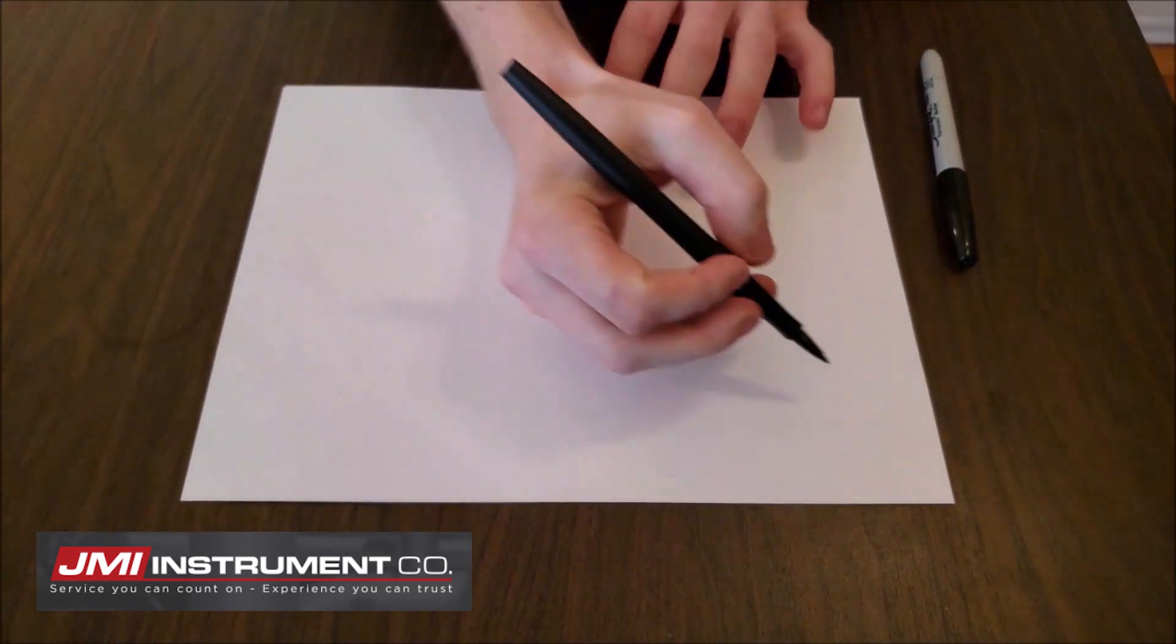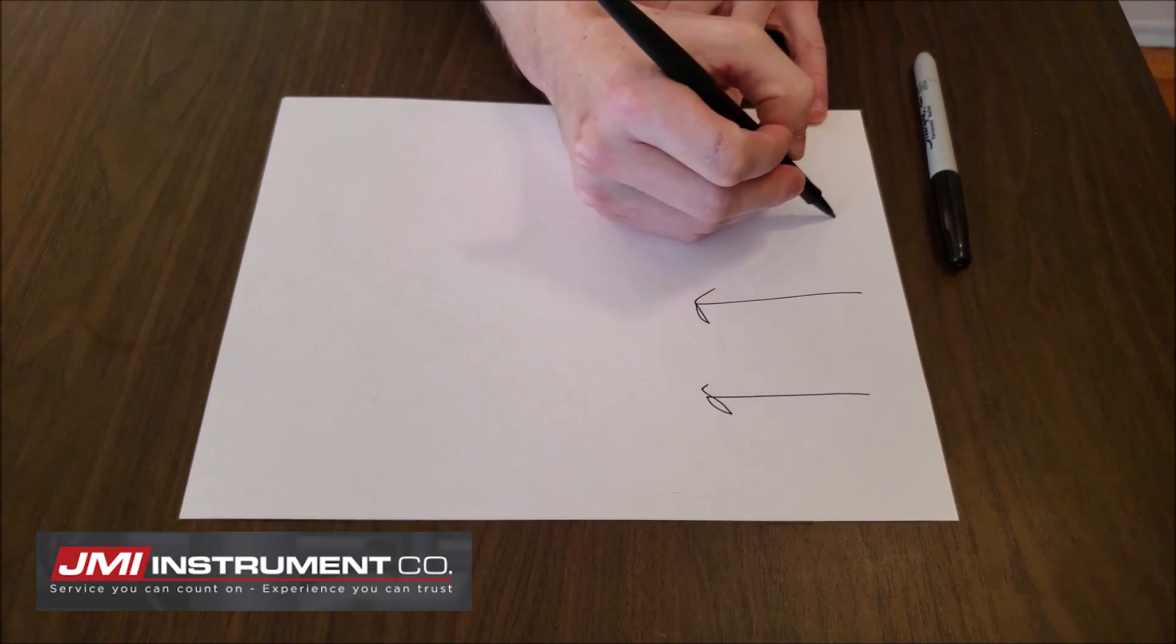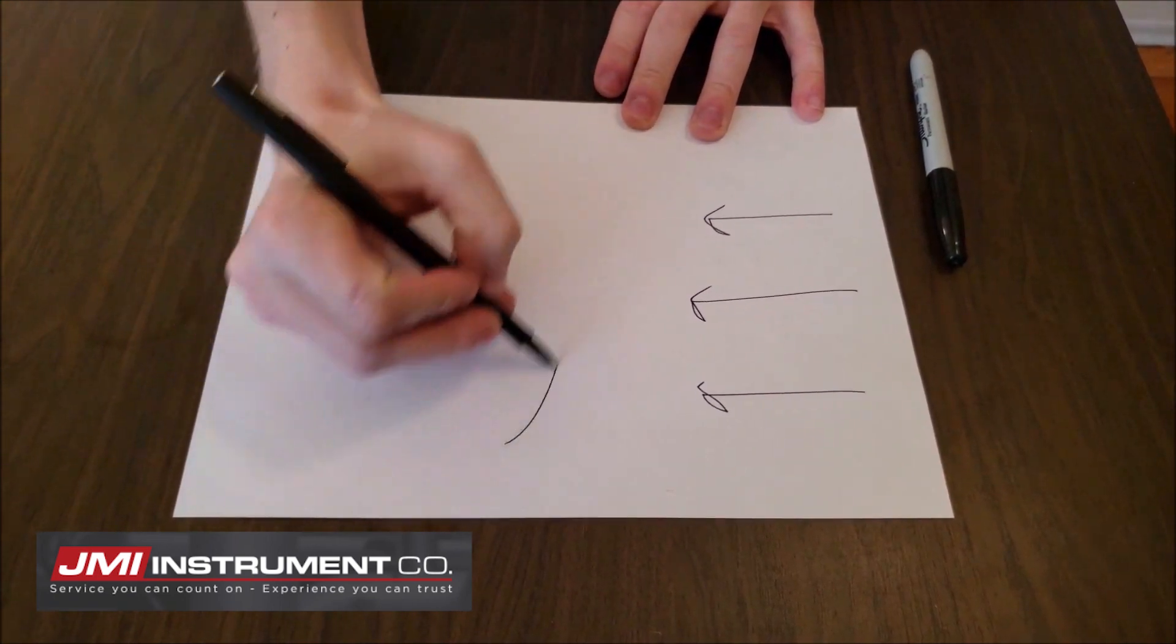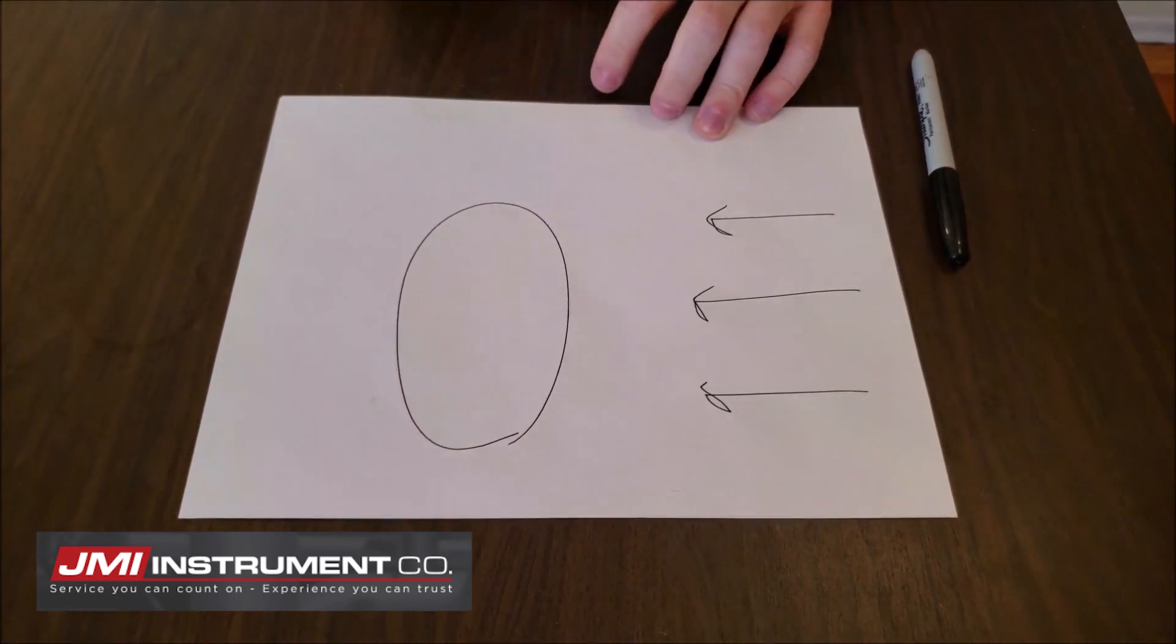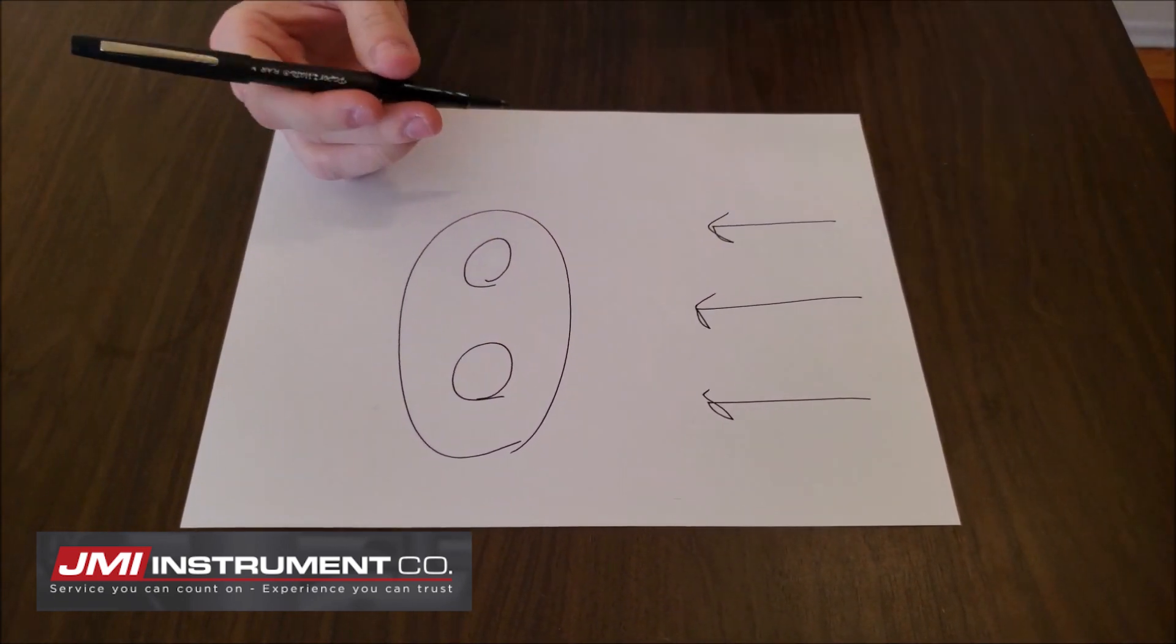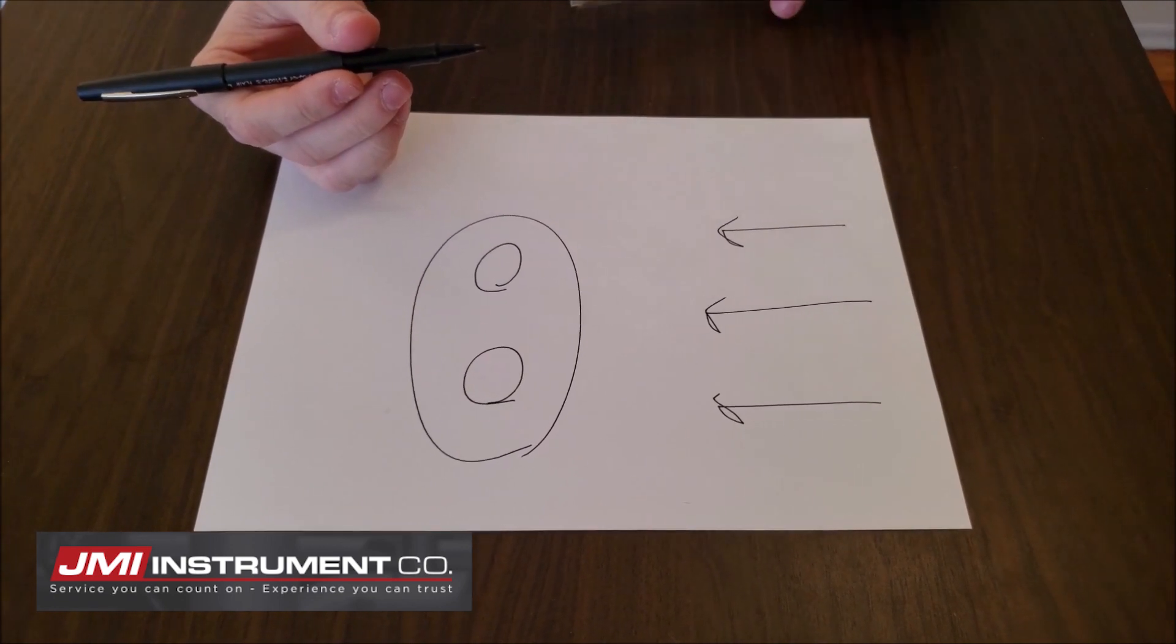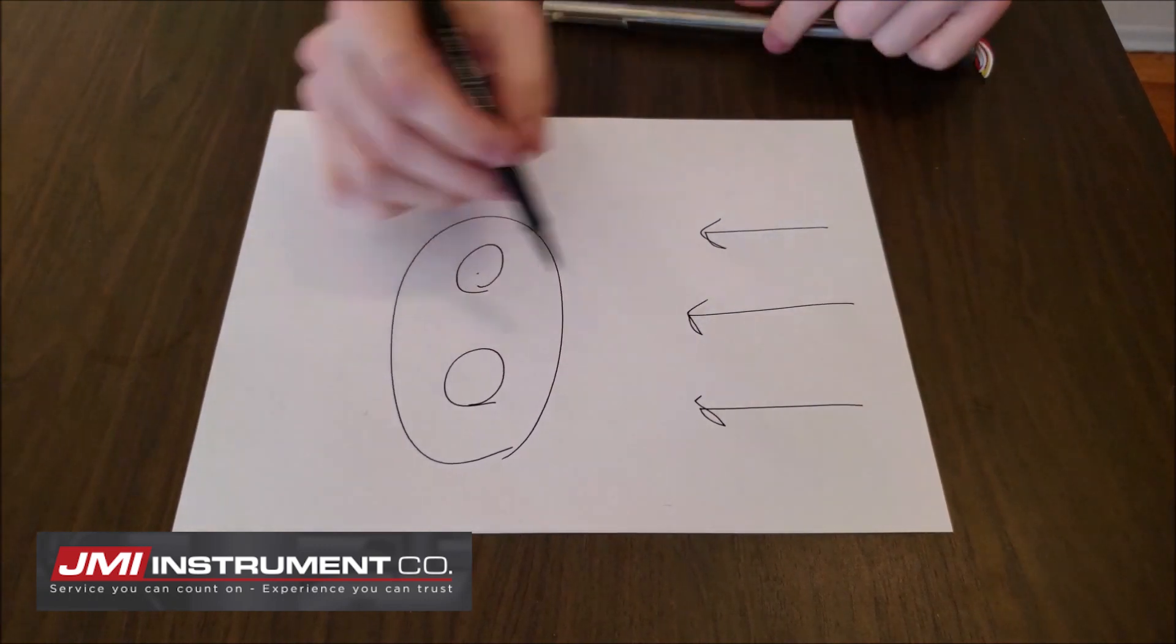If we take a look at just an example of airflow, so we've got airflow coming in this way, right, and here is your probe. And you have two sensing elements in your probe. Just like the competitor's probes, these are going to look like this. See how that works? Directly in line with the airflow.